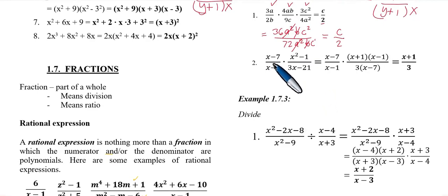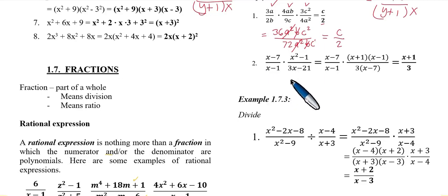Next, number 2. (x minus 7) over (x minus 1) multiplied by (x square minus 1) over (3x minus 21). Let's think about how to simplify. Like we did earlier when simplifying rational fractions, apply that here. It's not just multiply, though the instruction says multiply.